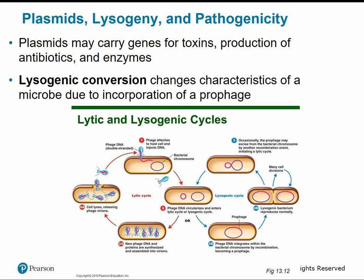Plasmids and lysogeny can also contribute to pathogenicity. Plasmids carry bonus genes — not part of the main chromosome — that may carry genes for toxin production, antibiotic resistance, and certain enzymes. Through lysogeny, a bacteriophage's DNA can be incorporated into the host cell as a prophage — a recombined hybrid cell — that can now produce new traits like capsules or toxins, changing the characteristics of the microbe.